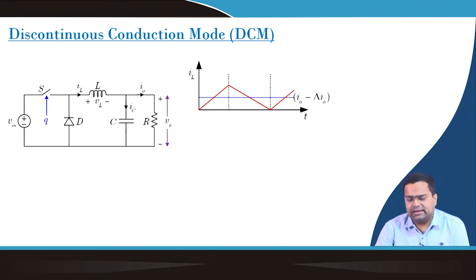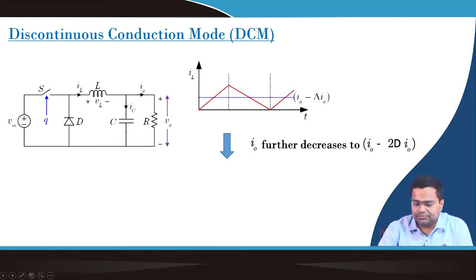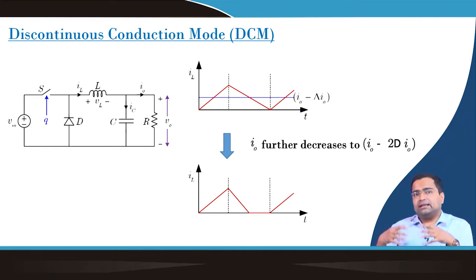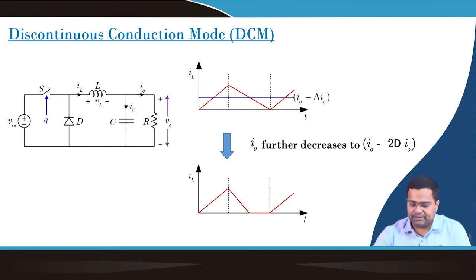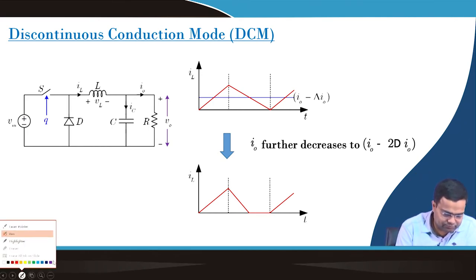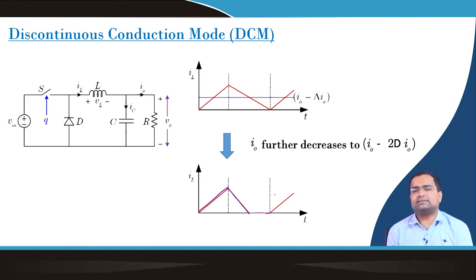If we further decrease the inductor current from I0 minus delta I0 to I0 minus 2 delta I0, the inductor current will enter into discontinuous conduction mode during the periodic interval. Initially, during the on time it will rise, then it will fall, and when the current reaches zero it will remain at zero until the switch turns on again.